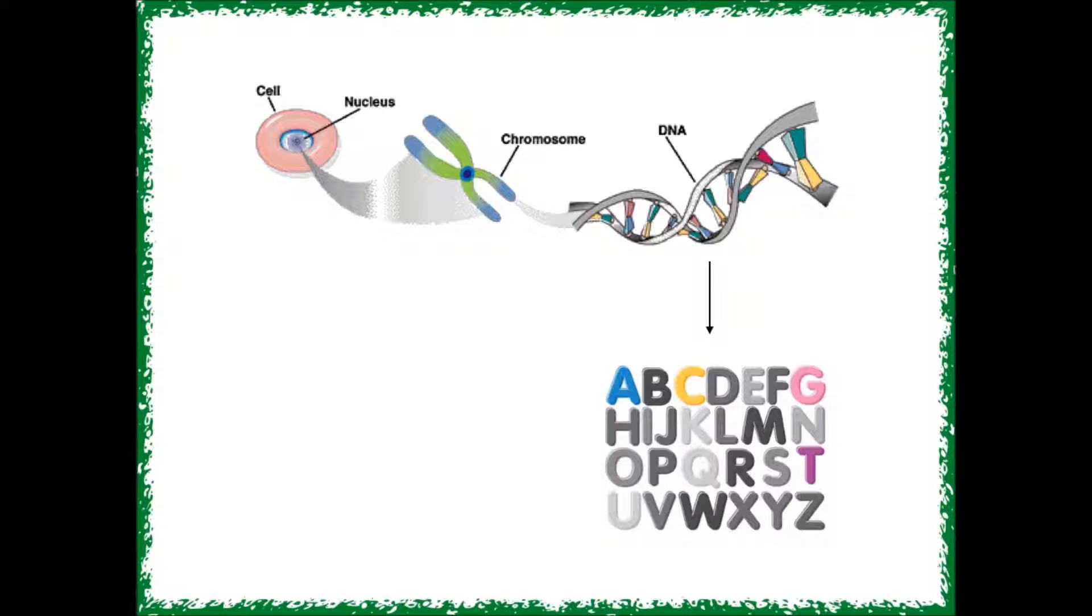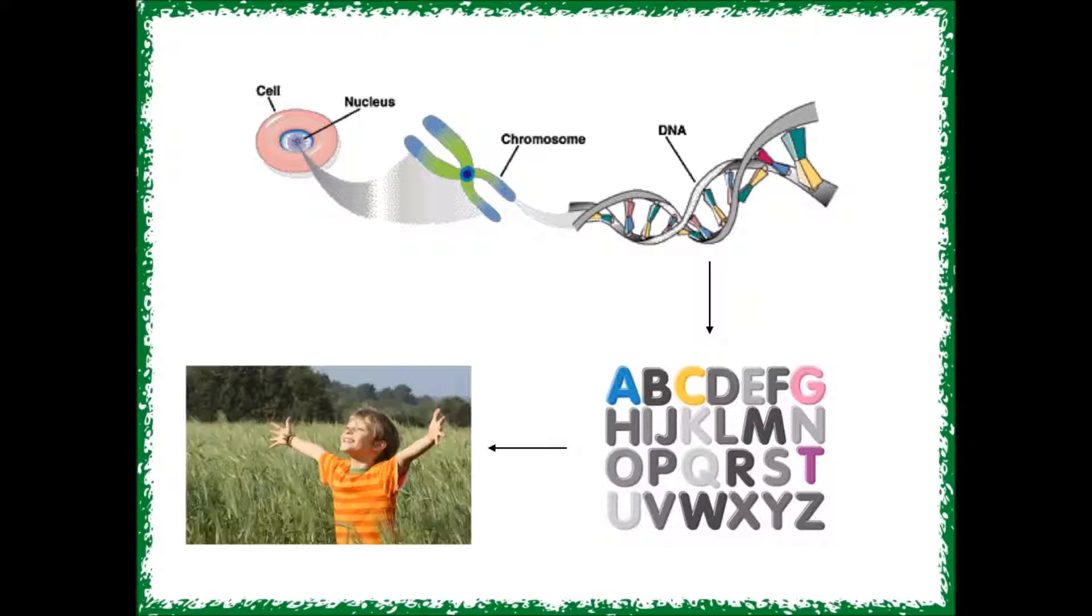Sometimes, when these letters are being copied inside your cells, the cell gets it wrong. We call this a mutation. A mutation can be the addition of an extra letter, the loss of a letter, or the changing of one letter to another. The little changes add up over time and we call that process evolution.